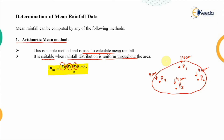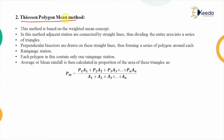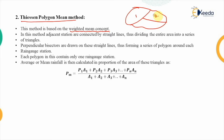Moving on to the next method, known as the Thiessen polygon method. In this method, the calculation is done based upon the weighted mean concept. Consider an area divided into 3 parts: the 1st part has rainfall P1, the 2nd and 3rd parts are similarly defined. A1 represents the area of the 1st block, with A2 and A3 being the respective areas. In the weighted mean concept, we assign certain weights — meaning how much of the entire area is covered by each block. The weight is calculated by dividing the area of that particular block by the entire area.